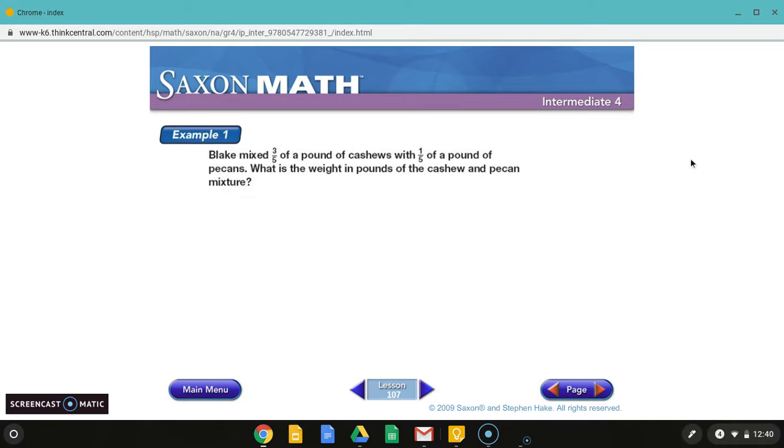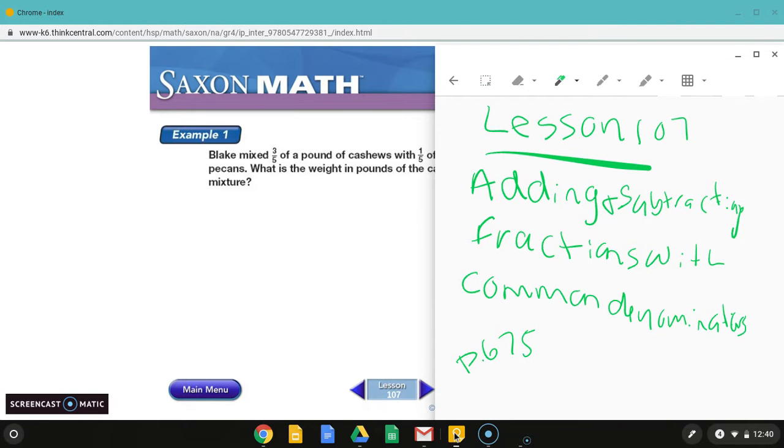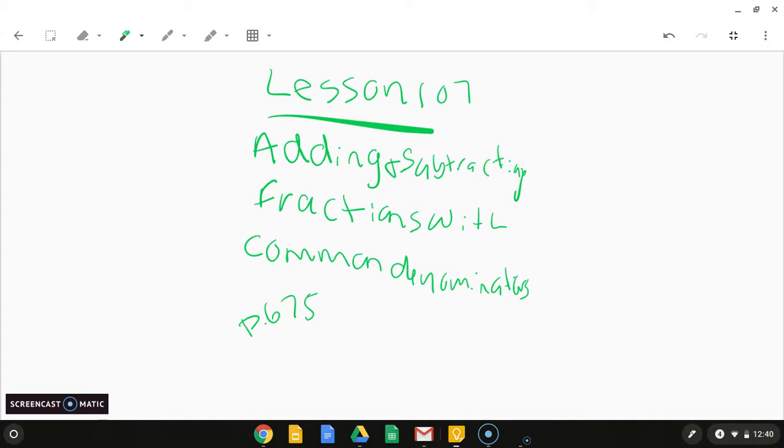All right, so Blake makes three-fifths of a pound of cashews with one-fifth of a pound of pecans. What is the weight in pounds of the cashew and pecan mixture? So he's mixing both of these together. Just because they're different doesn't mean we can't add them. The denominators are the same. So in order to add this, all we do is we add the numerators. So we have three-fifths cashews plus one-fifth of pecans. And so we get three plus one is four. The denominator stays the same. So it's four-fifths of a pound.